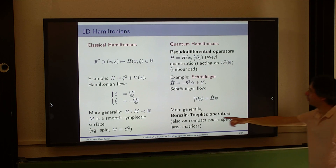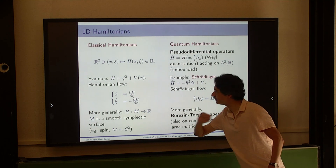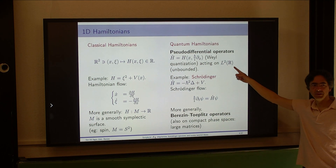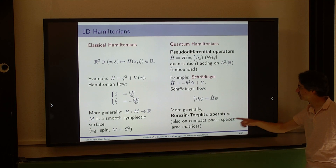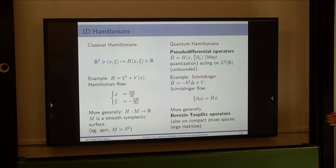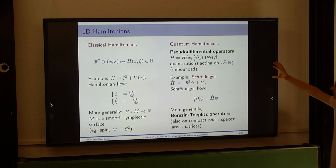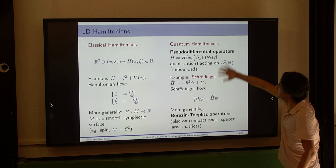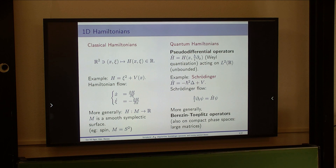If you generalize to any small symplectic surface, you leave the world of pseudo-differential operators and generalize to Fourier integral operators, working in more geometric situations. You can also include compact symplectic surfaces where the Hilbert space is finite-dimensional, but its dimension goes to infinity as h-bar goes to zero. The two pictures are actually very close to each other, but I will be mainly interested in pseudo-differential operators.